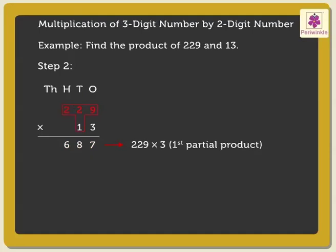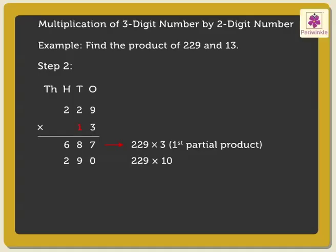Next, multiply 229 by the tens place of 13, that is 1. As the digit 1 is in the tens place of the multiplier, we are actually multiplying 229 by 10. So we write a 0 below the digit 7 of the first partial product. Next, 1 into 9 is equal to 9. 1 into 2 is equal to 2. Then, 1 into 2 is equal to 2. So we get 2,290 as the second partial product.